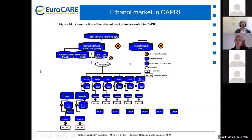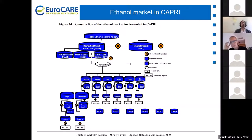Just a quick question: the second generation ethanol production is simply a term for saying future technologies of ethanol production? Yes, exactly. If you think about it in the CAPRI context, this is everything that is not linked to the cropping activities that we have in the model.